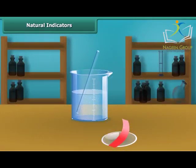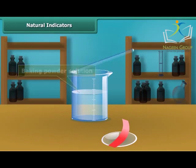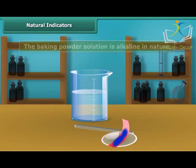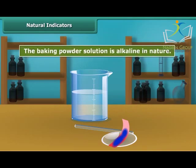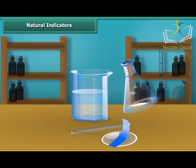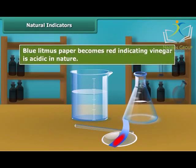Dip a clean stirring rod into the baking powder solution and then touch the wet stirring rod to the red litmus paper. Red litmus paper turns blue, indicating that the baking powder solution is alkaline in nature. Again, dip a clean stirrer into the vinegar solution and put one drop on blue litmus paper. Blue litmus paper becomes red, indicating vinegar is acidic in nature.